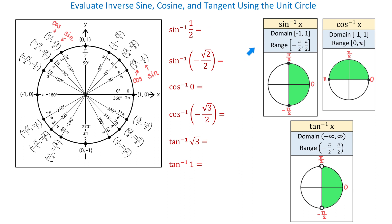To get the right answer, let's look at the properties of inverse sine functions. The domain of this function is any number from negative 1 to positive 1, meaning the input must be in that range, otherwise the function would be undefined. The range of the inverse sine function has to be an angle between negative pi over 2 and positive pi over 2. This includes quadrant 1 and quadrant 4. Pi over 6 is in this range, so inverse sine of 1 half is pi over 6.